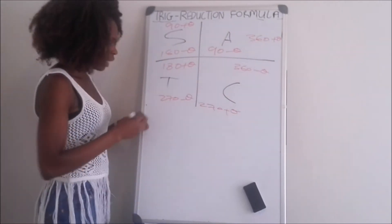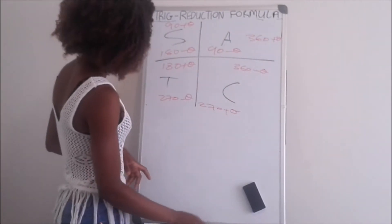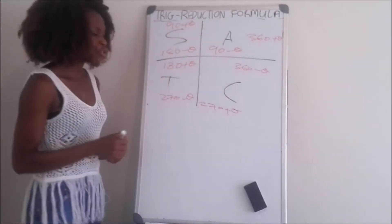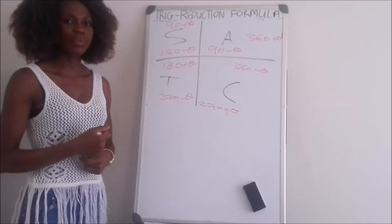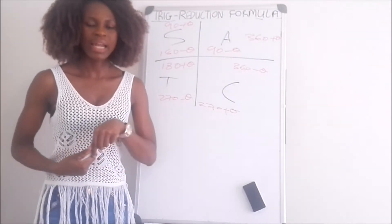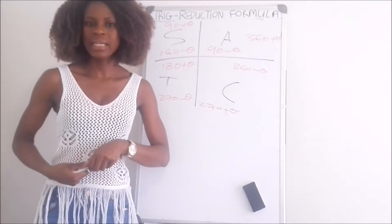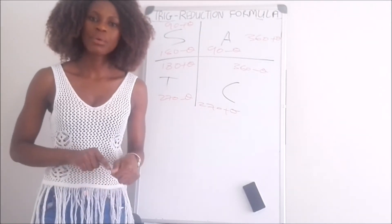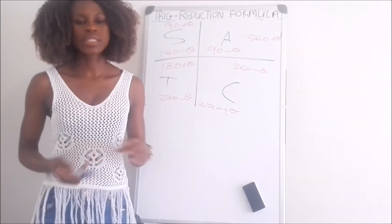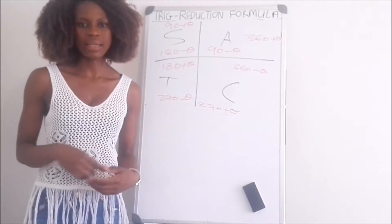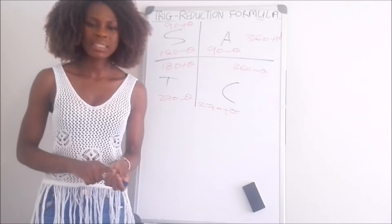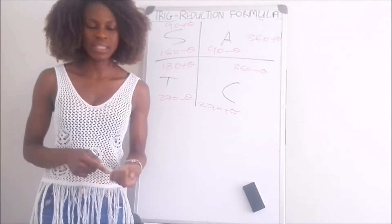90 plus or minus theta, and 270 plus or minus theta, are the co-functions of sine and cos. So if it's sine of (90 plus theta), the answer will be cos theta. Sine changes into cos and cos changes into sine. The co-function rule only affects sine and cos, but it does not affect tan.